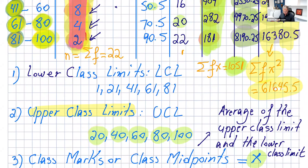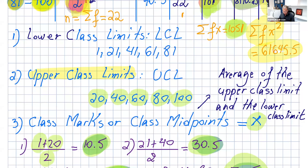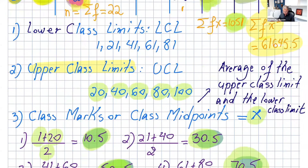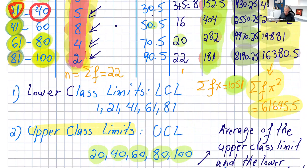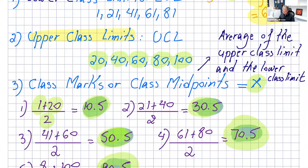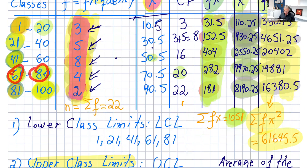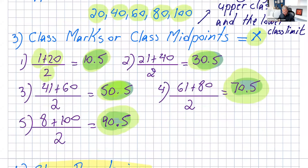Then we have the class marks, or class midpoints — it's just the average of the upper and lower class limits. For the first one, it's (1+20)/2 = 10.5. The second is (21+40)/2 = 30.5. Continuing, we get 50.5, then (61+80)/2 = 70.5, and 90.5.